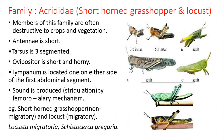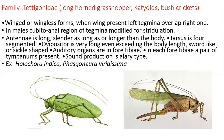Members of Acrididae are often destructive to crops and vegetation, making them serious pests. Antennae are short; tarsus is three-segmented. Ovipositor is short and horny. Tympanum is located on either side of the first abdominal segment. Sound production or stridulation occurs by a femoral-alary mechanism. Short-horned grasshoppers are non-migratory, while the name 'locust' is used for migrating species — such as Locusta migratoria and Schistocerca gregaria.